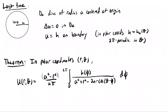Remember in the last lecture, we spent basically the whole time analyzing the following boundary value problem for the Laplacian on a disk in the plane. We're assuming we have a disk D_a of radius a, centered at the origin in the plane. The problem is to find a function u such that the Laplacian of u is equal to zero inside the disk, and such that u is equal to a given function h on the boundary.